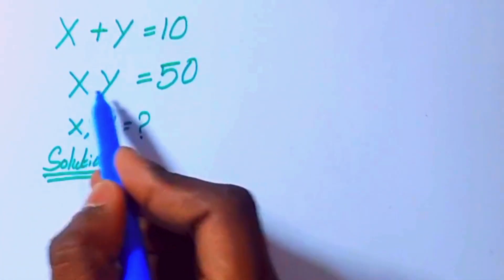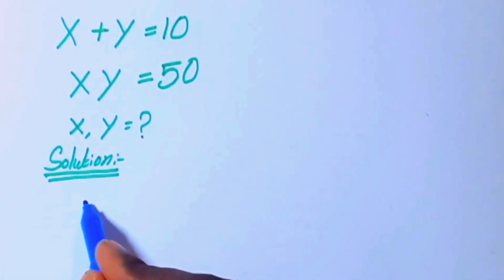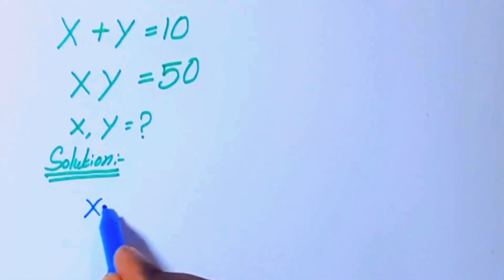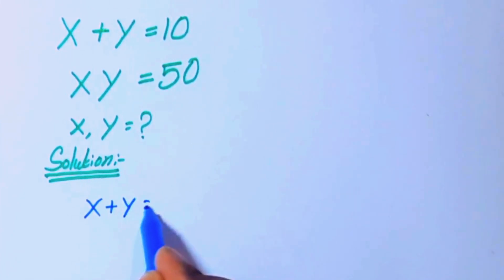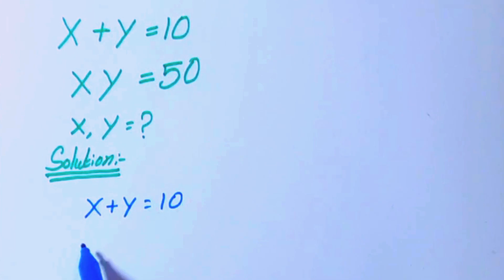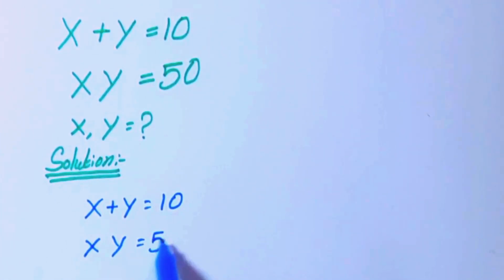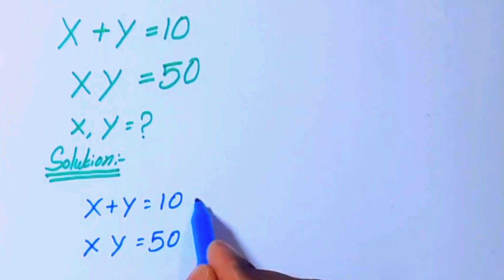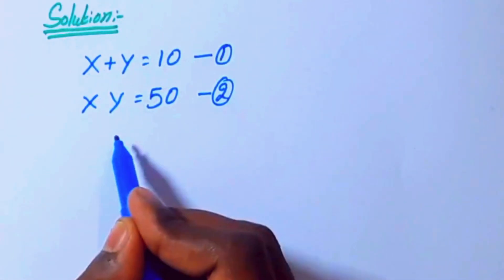Today we are going to solve this equation to find the x and y solution. x plus y equals 10, and x times y equals 50. This is equation 1 and this is equation 2.